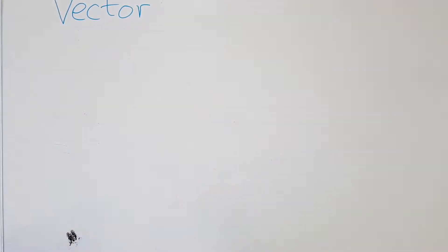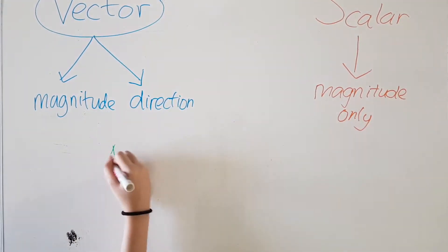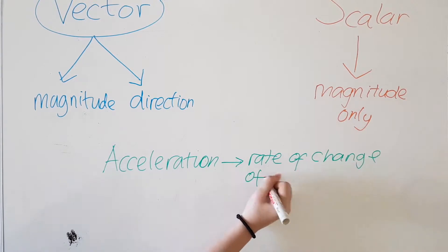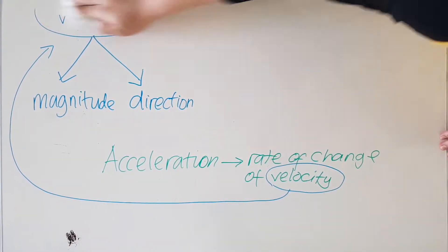As we all know, there are two types of quantity: vector and scalar. Vector is a quantity which has both magnitude and direction. Scalar is a quantity which only has magnitude. Since velocity has magnitude and direction, acceleration is considered to be a vector quantity.